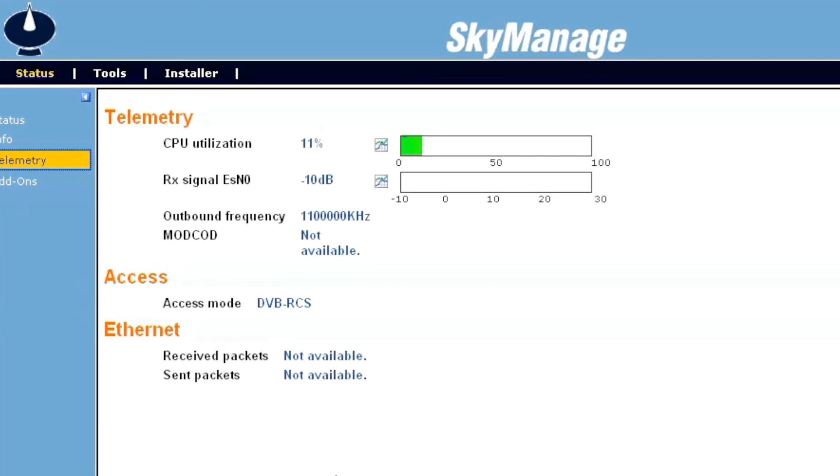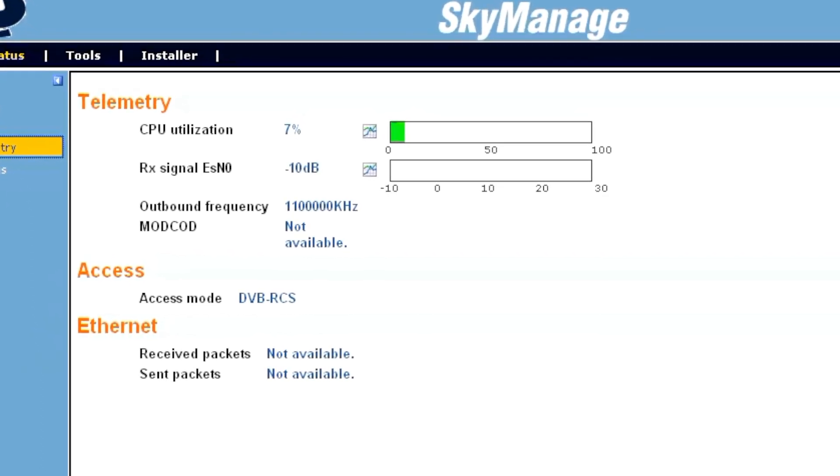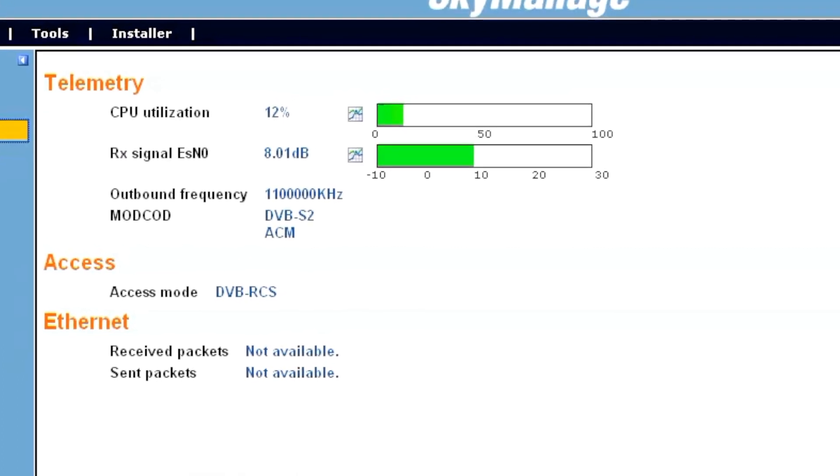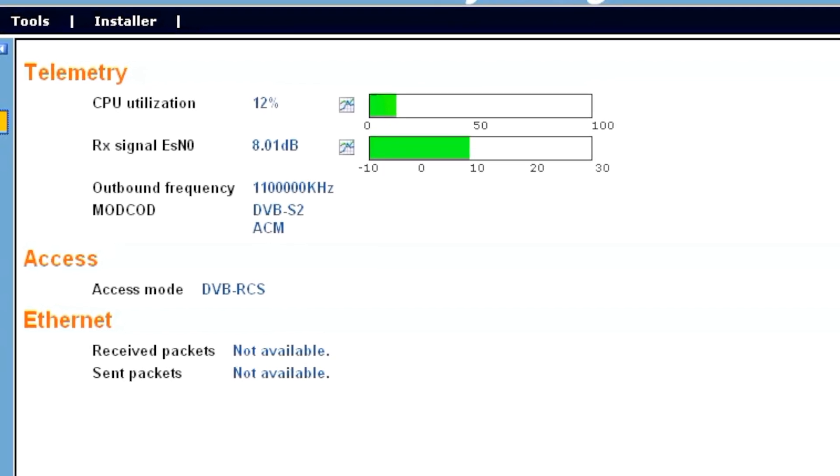After doing so, access the terminal. In the status section, in the telemetry subsection, we can see the orientation value, RxSignal ESN0, which will change in real time according to the modifications made to the orientation of the antenna, and which, without having yet done any fine-tuning, will not be valid.